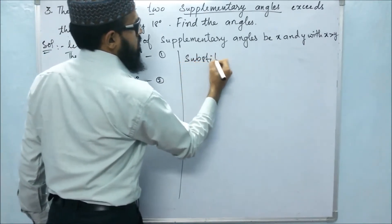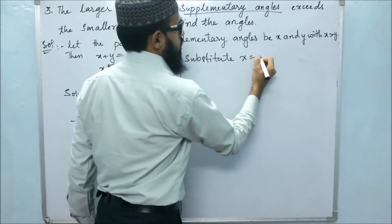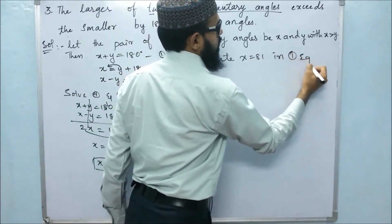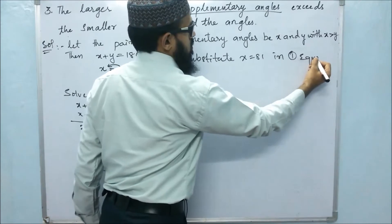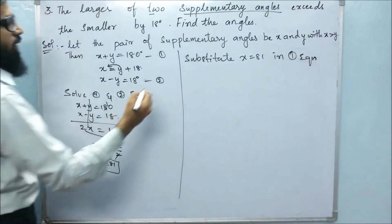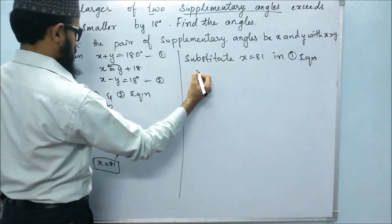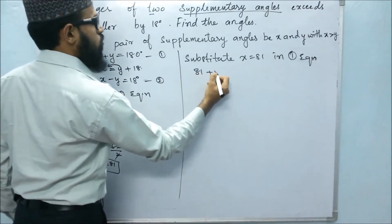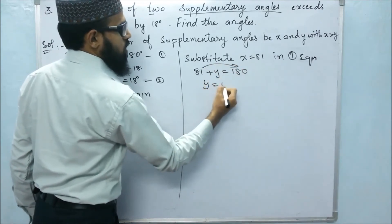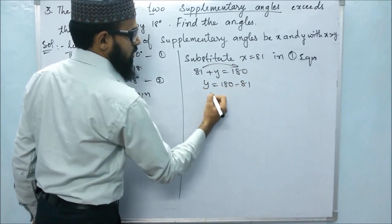Substitute. We will put x equals 81 in the first equation. Then next, we will get 81 plus y equals 180. 81 goes to that side, y equals 180 minus 81.